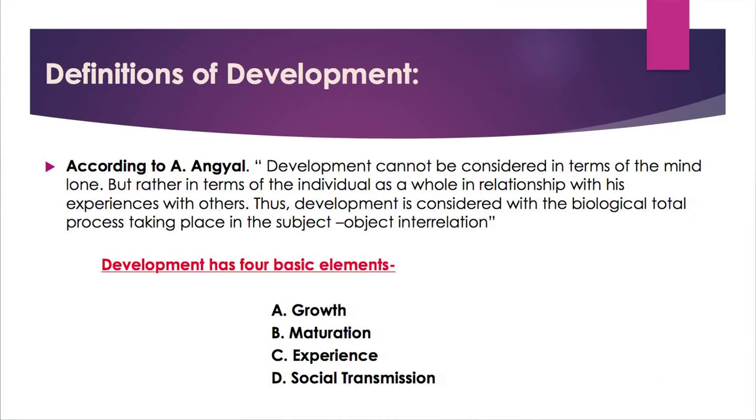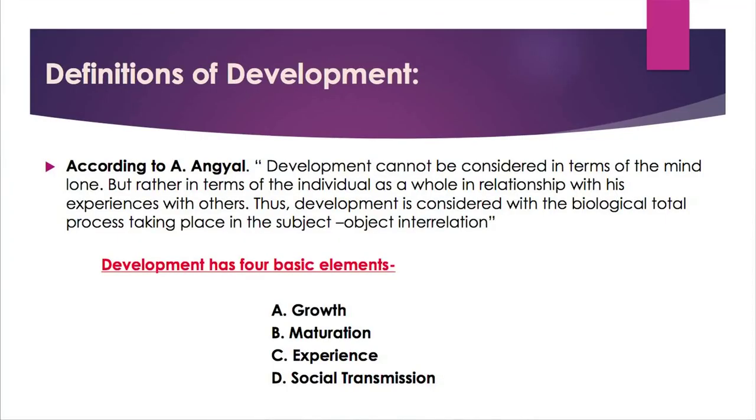Then there is social transmission. Because we are all social beings, we make social interaction and social contact, and on the basis of that, we make social transmission. It is socially transmitted, and we gain experience, we gain maturation, and as a whole, we gain development. So these are the four important elements of development.